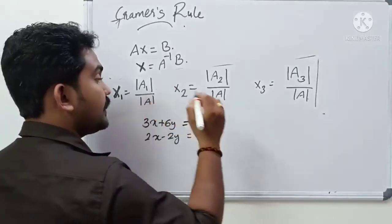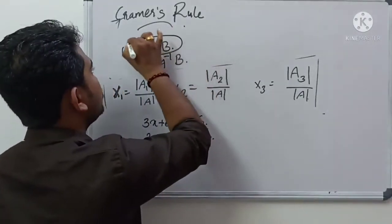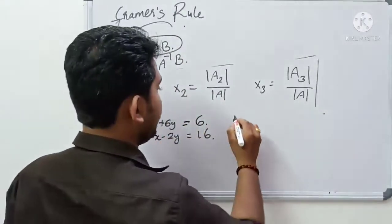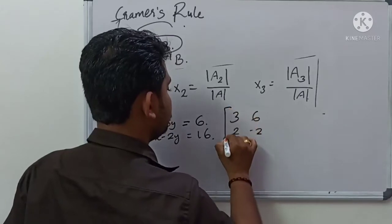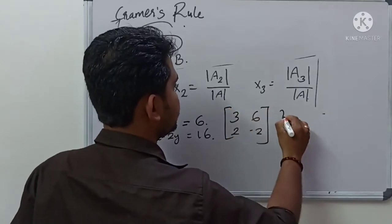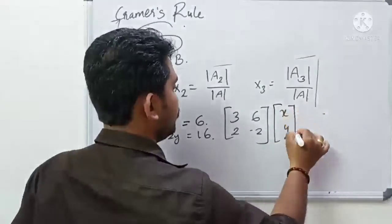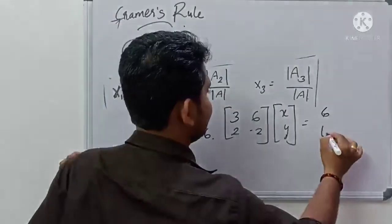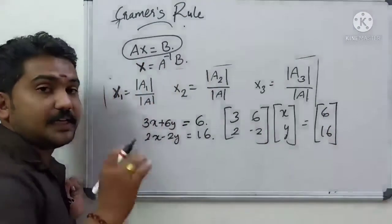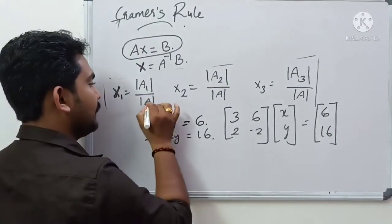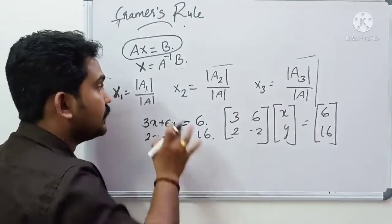We will learn the format of Ax is equal to b. The matrix A is: 3, 6, 2, minus 2. And x, y is equal to 6, 6. Now we can identify A1 and A2 for the 2x2 matrix.